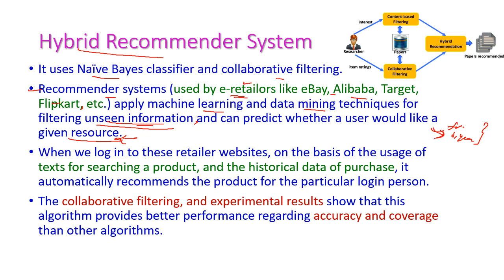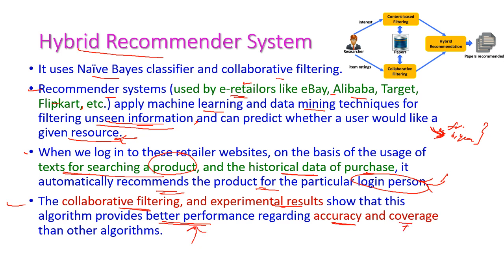Once you log in to Flipkart or YouTube, you can see certain products based on which machine you are using. Based on the text you use to search for a product, or based on the historical purchase data, the system will automatically recommend products for that particular user. Experimental results show that the Naive Bayes classifier provides better performance in terms of accuracy and coverage of products compared to other algorithms.